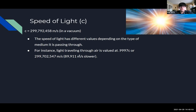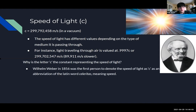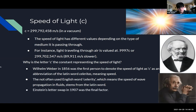Why is c used to represent the speed of light? Wilhelm Weber in 1856 was the first person to denote the speed of light as c, as an abbreviation of the Latin word celeritas, meaning speed. Einstein started using the letter c in 1907 — he initially used capital V, but once he swapped to c it became canon. The English word celerity, meaning the speed of wave propagation in fluid, stems from this same Latin word.